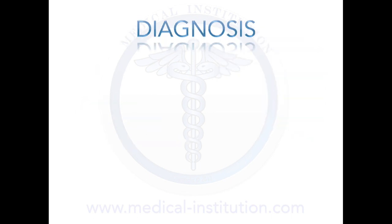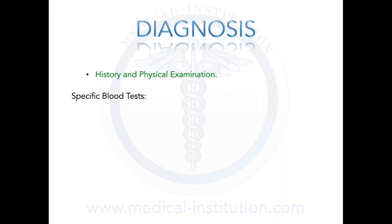To diagnose von Willebrand disease, we first obtain a full history and do physical examinations. We ask detailed questions about the patient's medical history since childhood, including specifics about past bleeding episodes as well as any bleeding problems with their parents or siblings. We also check for bruises or other signs of recent bleeding. A more specific test is the von Willebrand factor antigen test, which determines the level of von Willebrand factor in the patient's blood by measuring the von Willebrand factor protein.